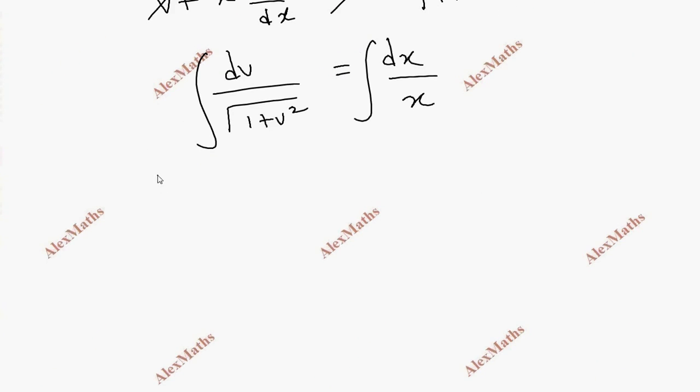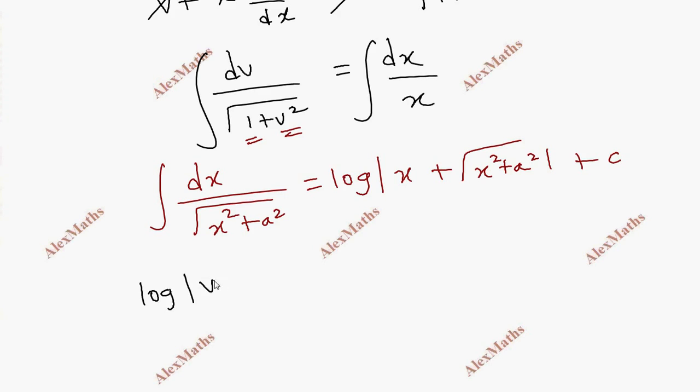Once variable separable, take the integral. This is direct integration formula: integral dx by root of x squared plus a squared equals log mod x plus copy the denominator plus c. If this is x and this is a, a equals 1.